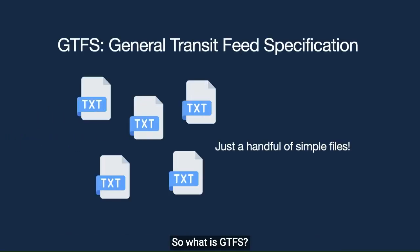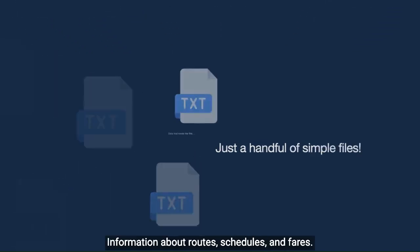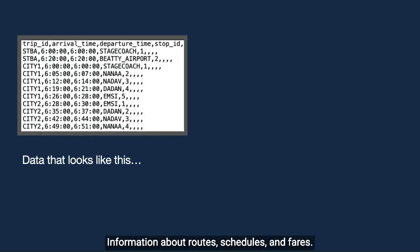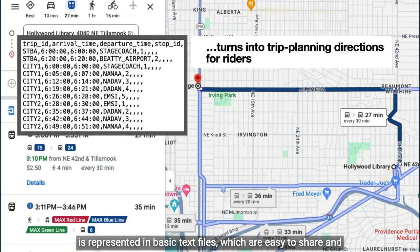So what is GTFS? It is a data specification used to distribute relevant information about transit systems to riders. GTFS is simple. Information about routes, schedules, and fares is represented in basic text files, which are easy to share and distribute, and straightforward to use across a variety of platforms.